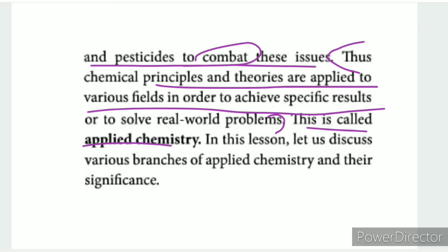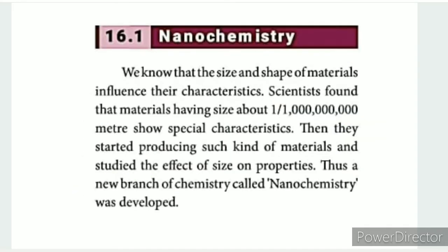Now, there are seven branches of applied chemistry. This is the nanochemistry section. We have to look at the nanochemistry machine. This is actually a nano-car — we use the science behind it, and it is called a nano-car. This is called nanochemistry.